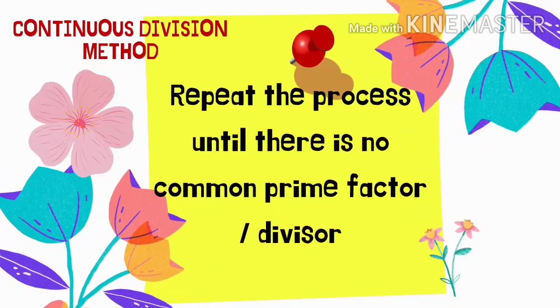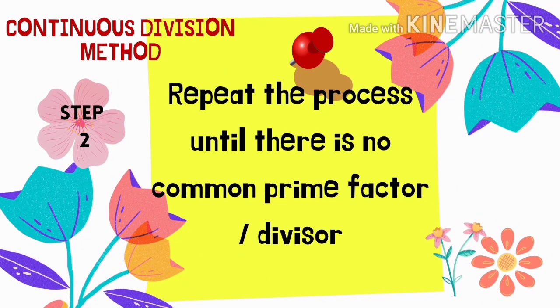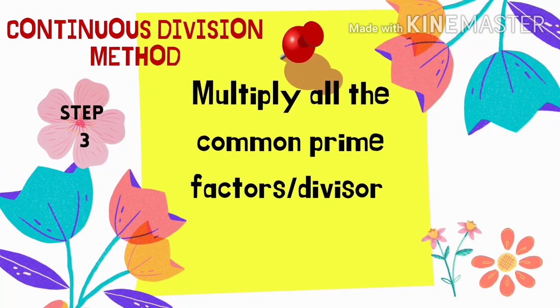Then, repeat the process until there is no common prime factor or divisor. And also, for our last step, multiply all the common prime factors or divisor.